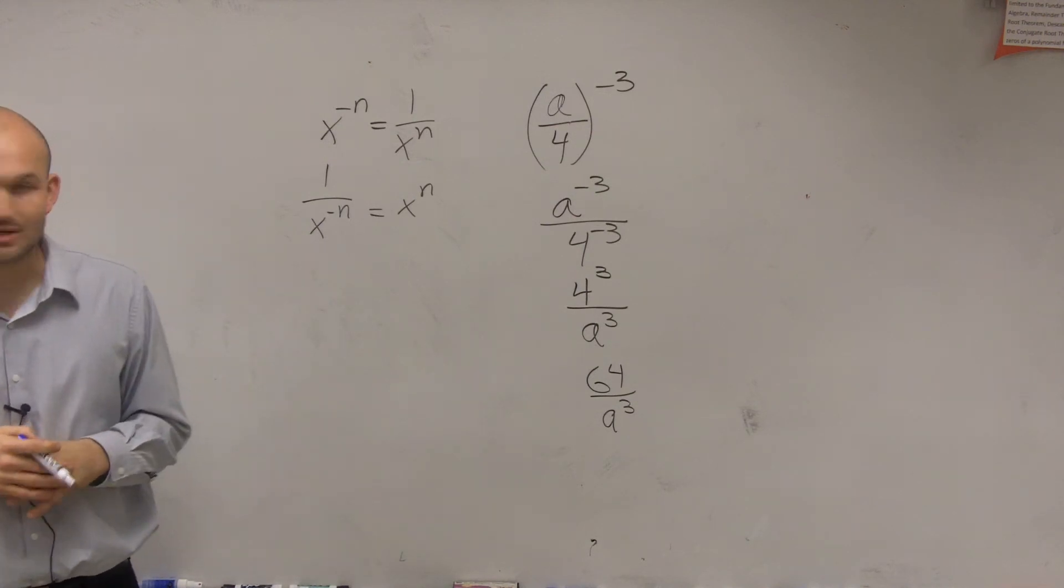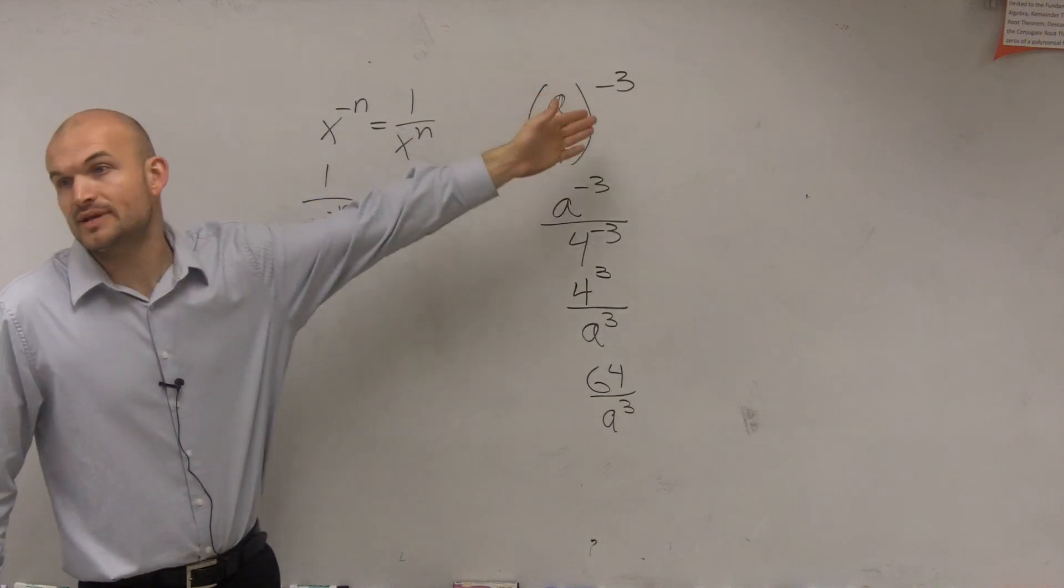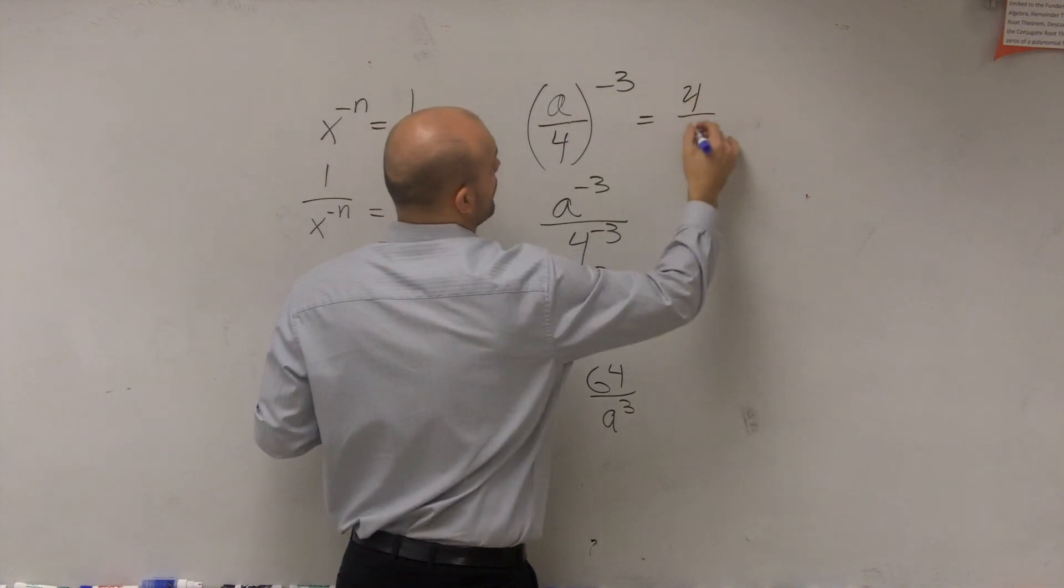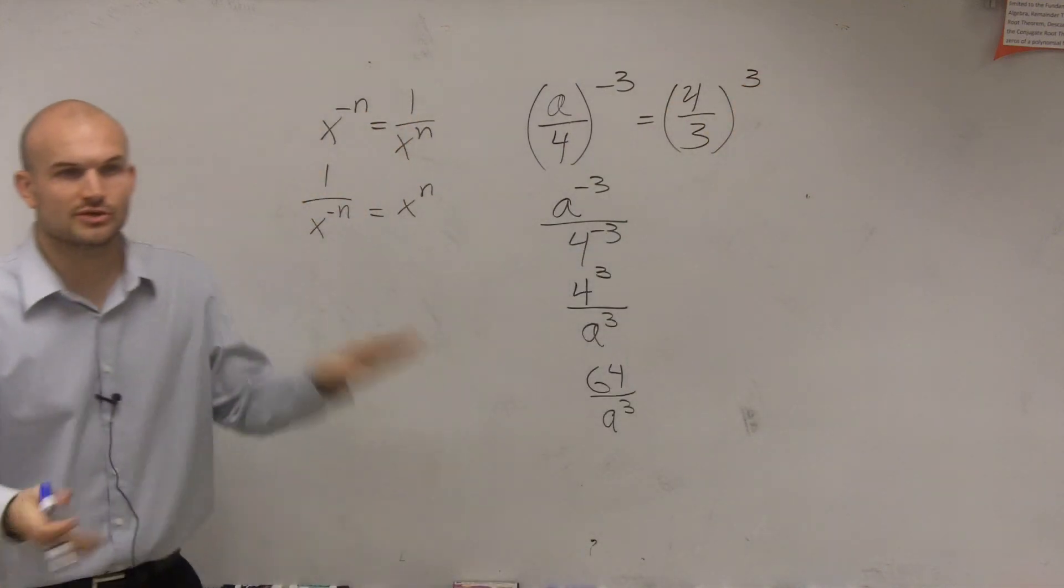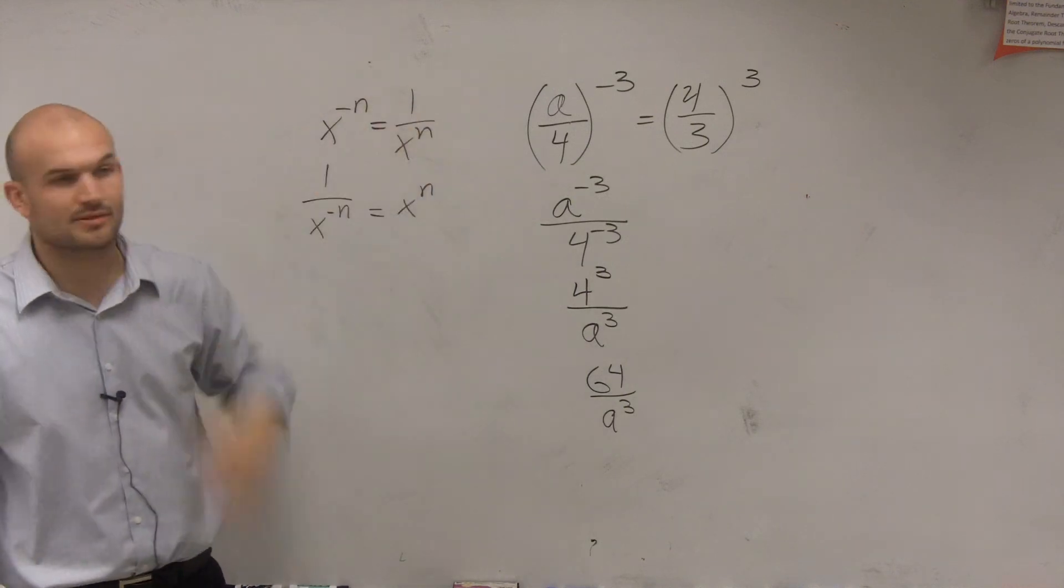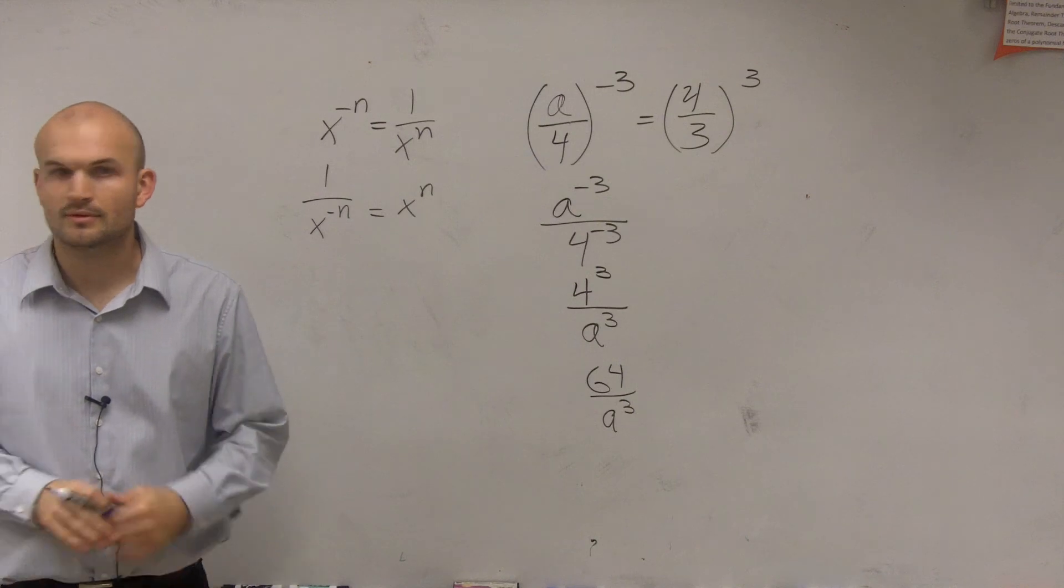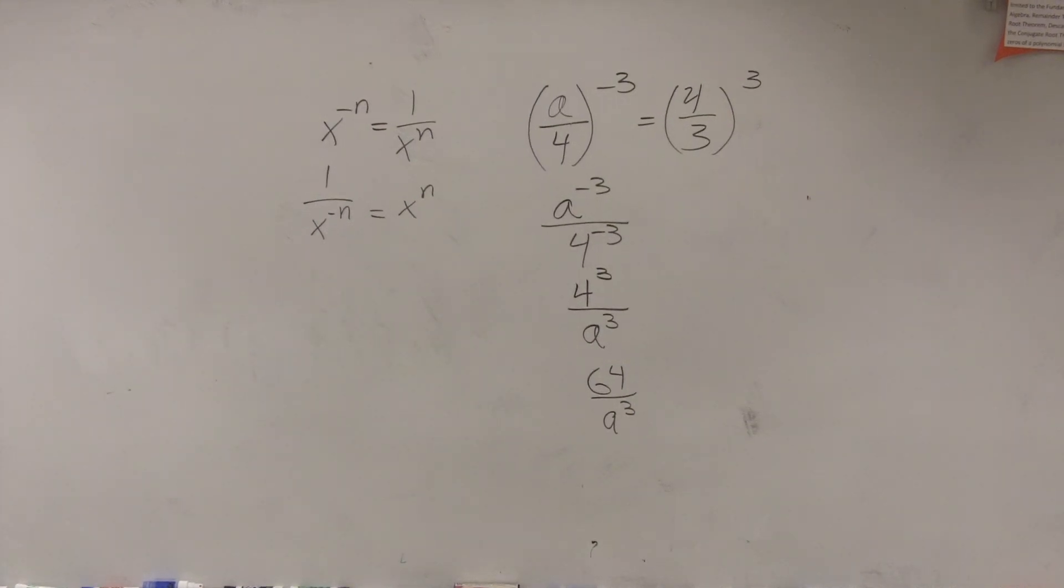If you want a little trick, whenever you have a quotient raised to a negative exponent, you can flip the quotient and change it to the positive exponent. So you just flip them and make it a positive exponent, and that gives you the same answer. That's the example.